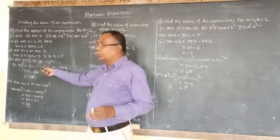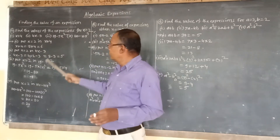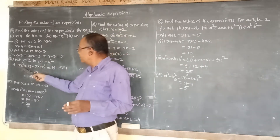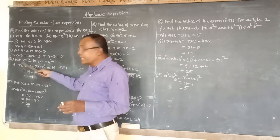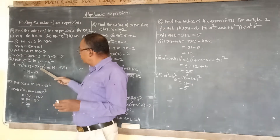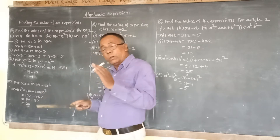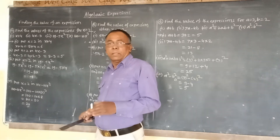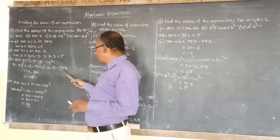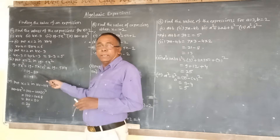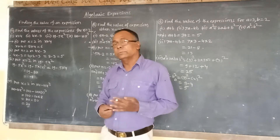Now put x equal to 2 in the third expression, 90 minus 5x squared. So 90 minus 5x squared equals 90 minus 5 into 2 squared. Here 2 squared is 4, so we get 90 minus 5 into 4. Applying the order of operations, we first multiply: 5 into 4 is 20. So 90 minus 20 gives the value of the third expression.